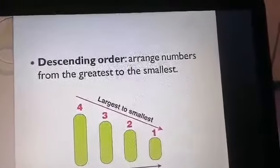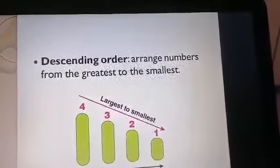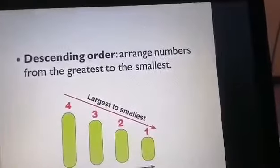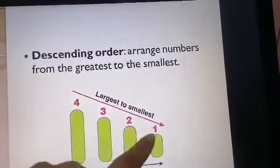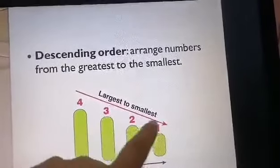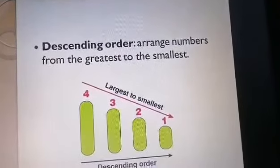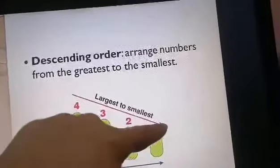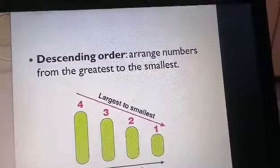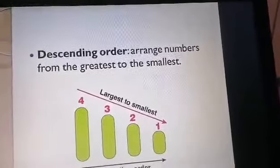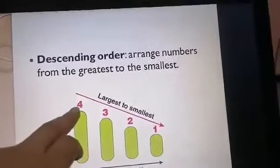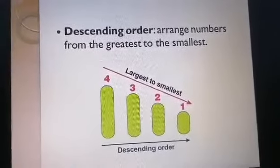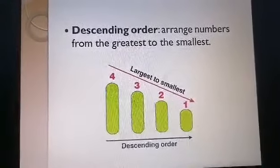On the other hand, we have descending order. Descending order arranges numbers from the greatest to the smallest. So we have again 1, 2, 3, 4. We are going to arrange these numbers from the largest to the smallest. Which number is the largest? It is 4. So: 4, then 3, 2, 1. This is descending order.